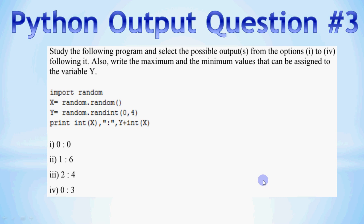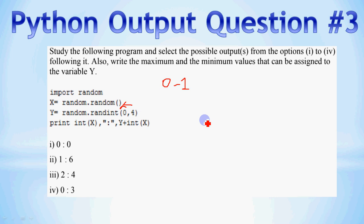In this question we will use the random library. We write 'import random' so that we can call the random functions. The first line is: x = random.random(). When we call the random function, it gives us a random number between 0 and 1 — it could be 0, 0.134, or any decimal value up to 1. You can verify this in Jupyter Notebook or PyCharm.